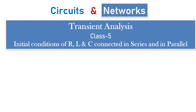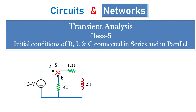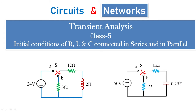Hi, welcome to another session of transient analysis. In today's class, that is class 5, we are going to see basic examples, especially the problems involved with the initial conditions of RLC circuits connected in series and in parallel. The switch in this condition is connected to a supply with passive elements: 3 ohms, 12 ohms, and 2 Henrys. The switching positions will be acting between these passive elements. We are going to see how the circuit behaves with an inductor and how it behaves with a capacitor.